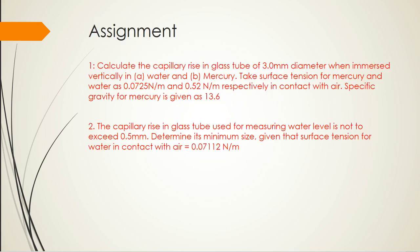Now for your assignment: calculate the capillary rise in a glass tube of 3 mm diameter when immersed vertically in water and mercury. Take the surface tension of water as 0.0725 N/m and mercury as 0.52 N/m, with specific gravity of mercury = 13.6. The only change from the solved example is the diameter. The answers are given in the question — please try this. Thank you.